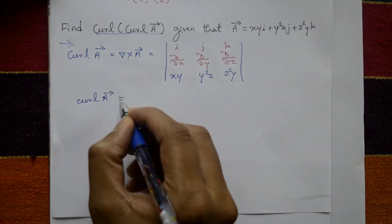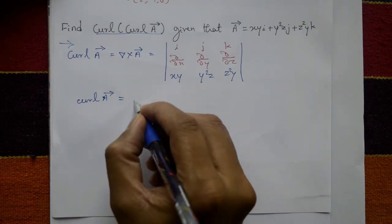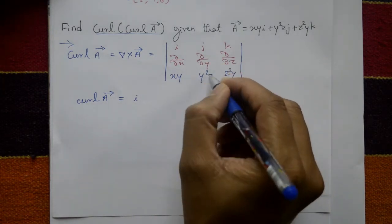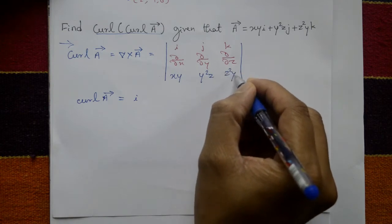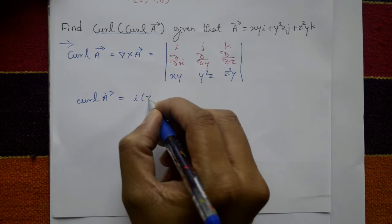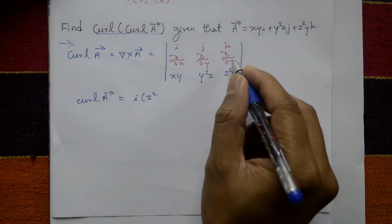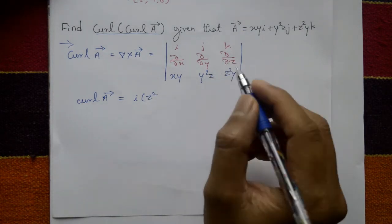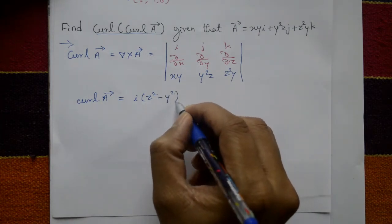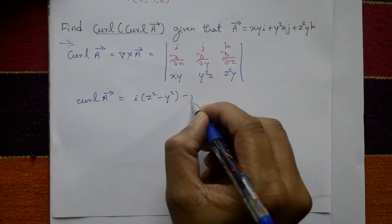Curl of A is equal to i into, expand this, differentiate with cross multiplication. Differentiate this one with respect to y, means z squared remaining, only z squared is a constant partially. Now differentiate this one with respect to z partially, minus y squared.